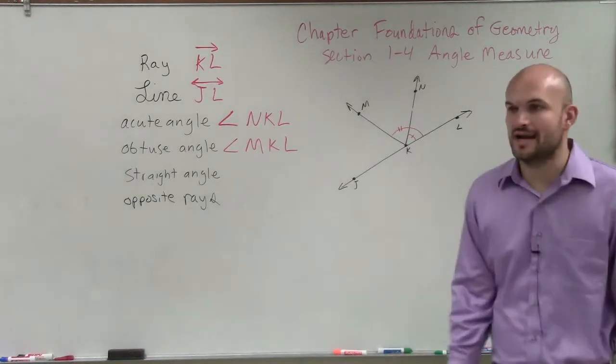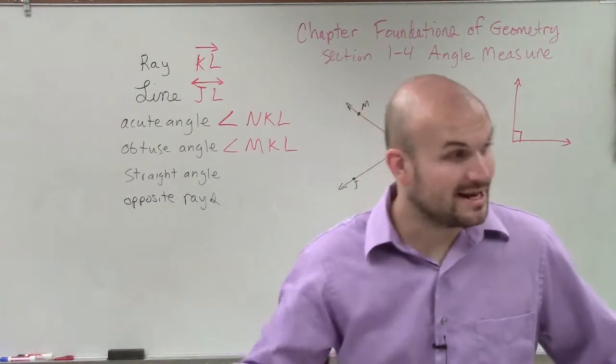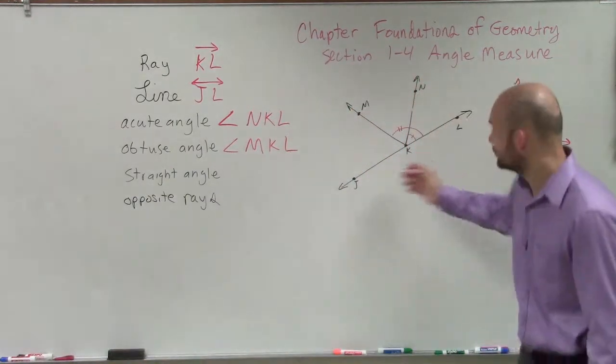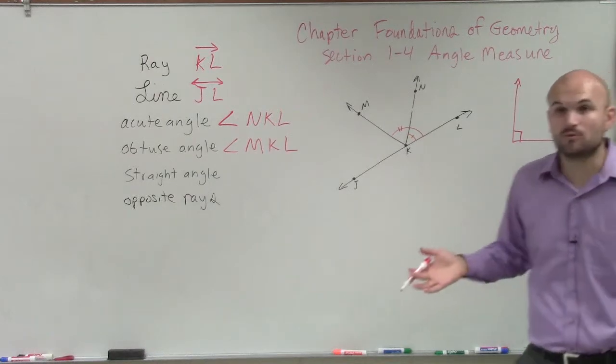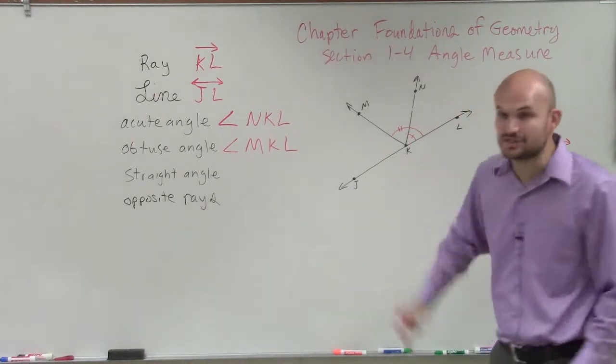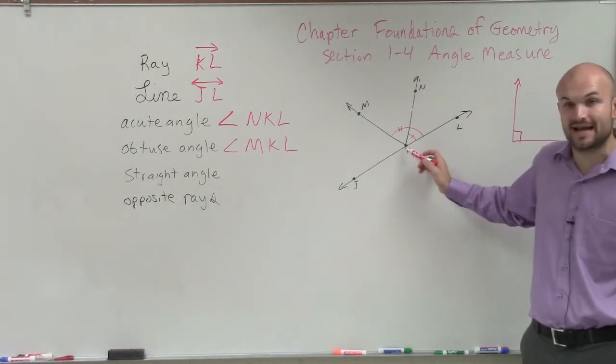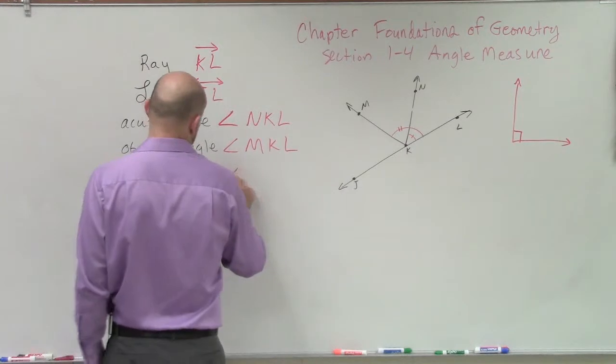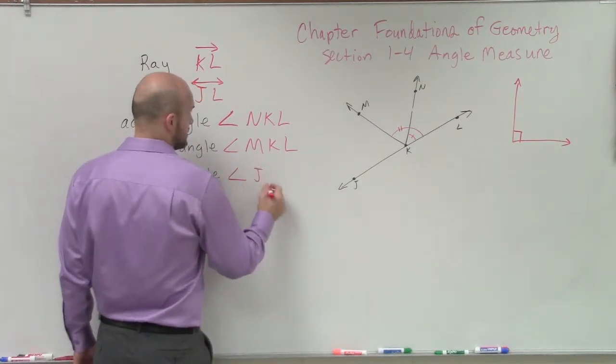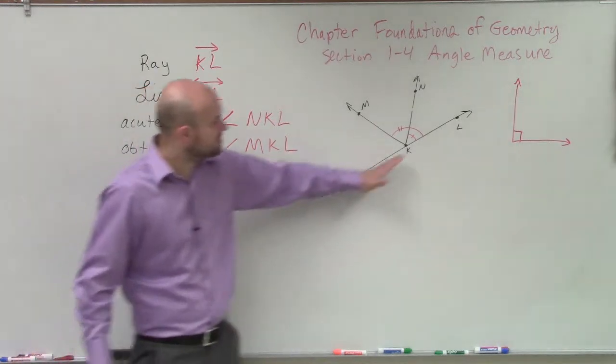Straight angle? Straight angle contains how many degrees? 180. And what that means is it's going to be a straight line. It has to be 180 degrees, which is going to be a straight line. There's only one angle that we can represent that makes a straight line. Well, actually, there's a couple. But there's only one that we can make that has a vertex. So our straight angle is going to be J, K, L. That's going to produce a straight angle.